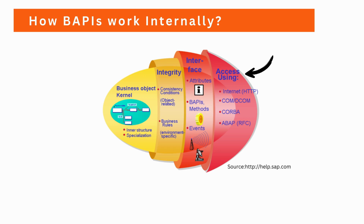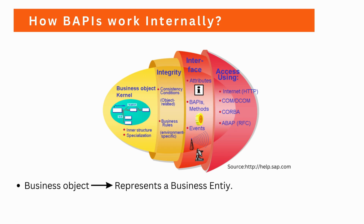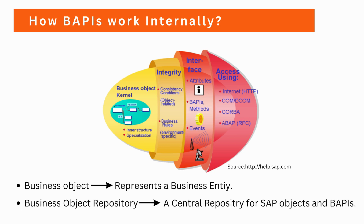In the business object kernel, a business object represents a business entity — for example, an employee or a sales order. We also have a business object repository, which is a central repository for SAP objects, and BAPIs act as a registry for all the centralized objects.